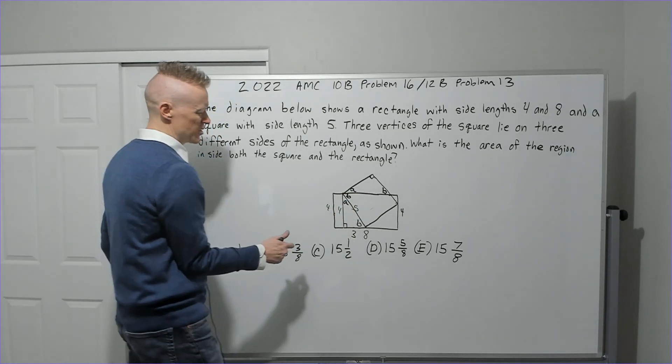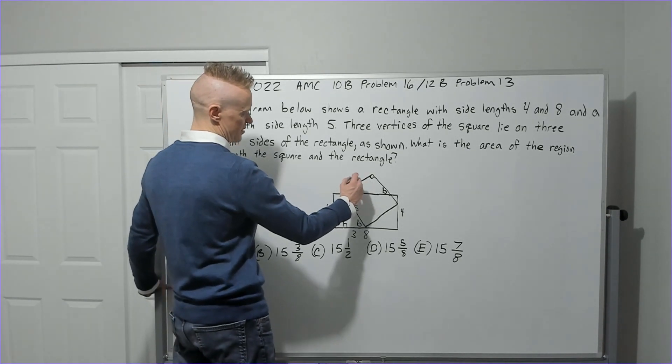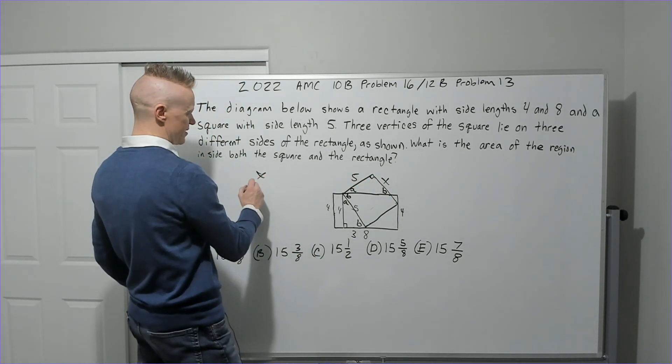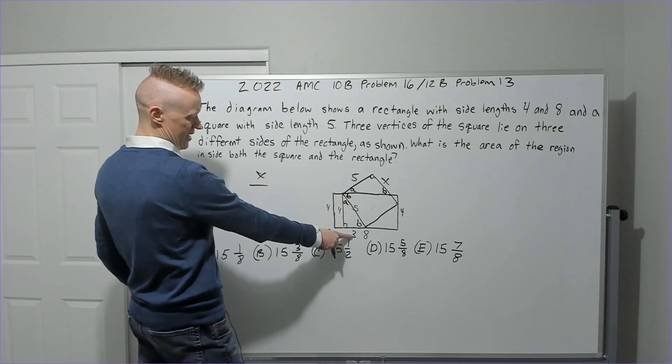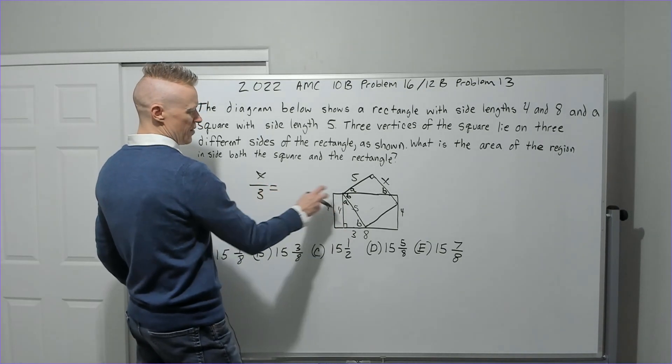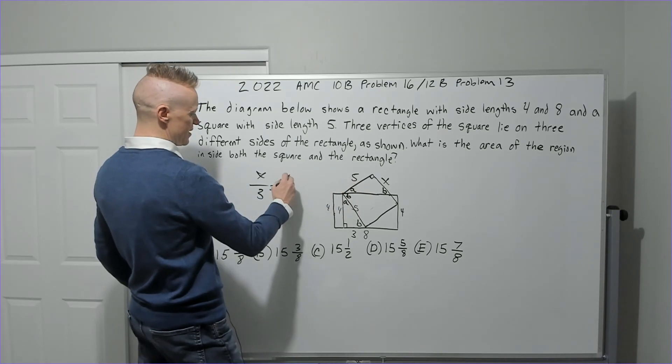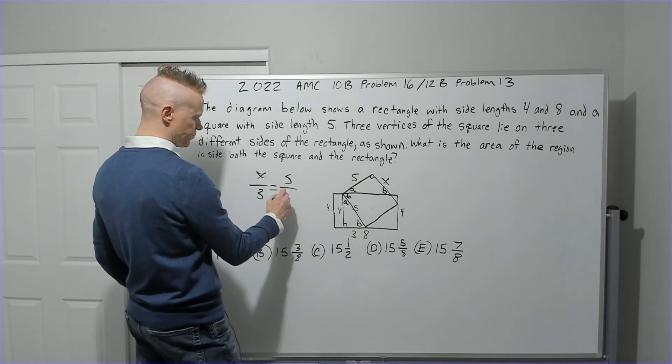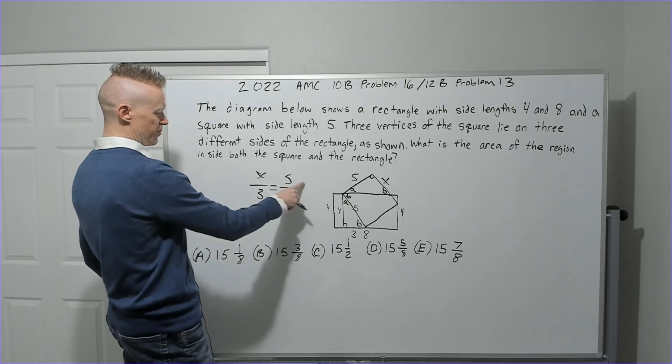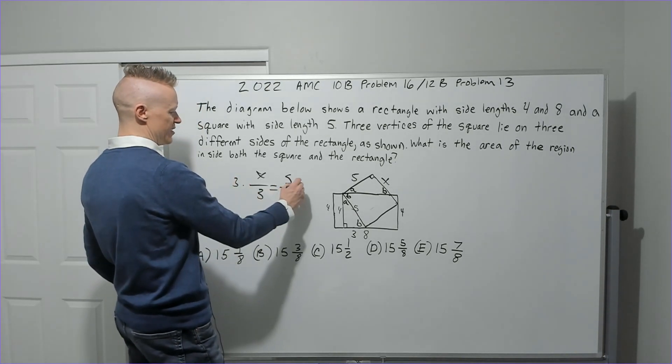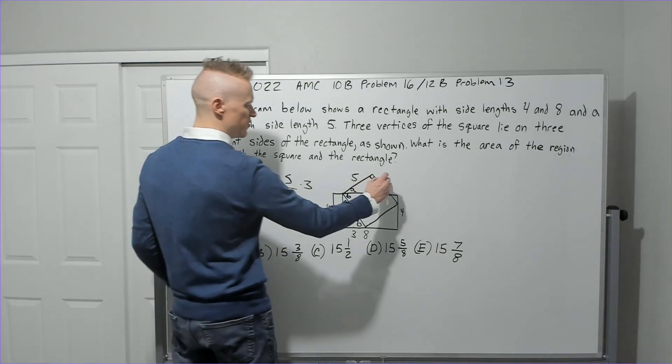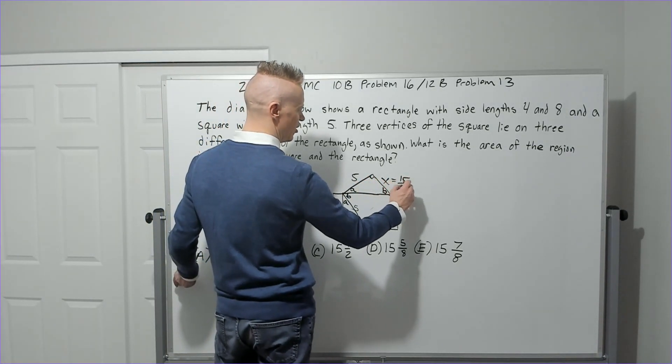And so because we have similar triangles, let's call this X over here. I'm going to say the side opposite A is X. Here, the side opposite A is 3. Then I have the side opposite B is 5. And the side opposite B is 4. So now we're going to multiply by 3 on both sides. You could cross multiply, but you would end up immediately dividing. So this is going to be 15 over 4.